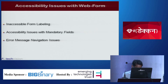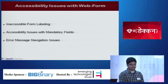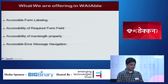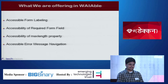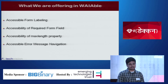Now you have seen what are the accessibility issues in a Rails web form. We have addressed these issues in our Viable gem. What we are offering: first, we have made form labeling accessible; mandatory fields are also accessible; for the maxlength property we have added accessibility features; and error message navigation is now very easy and accessible. I will be discussing these different features and Sangpal will demonstrate each one by one.